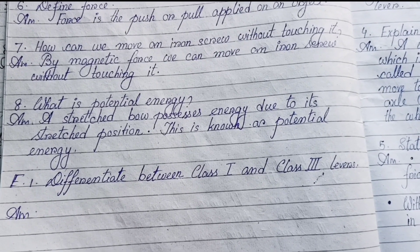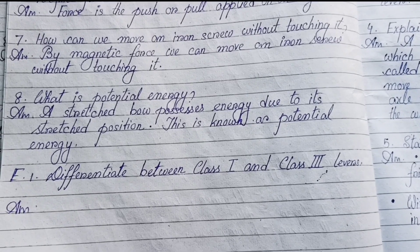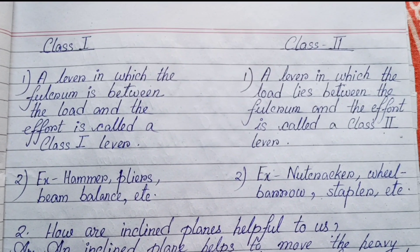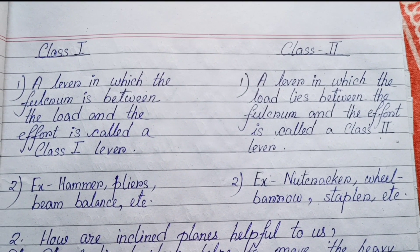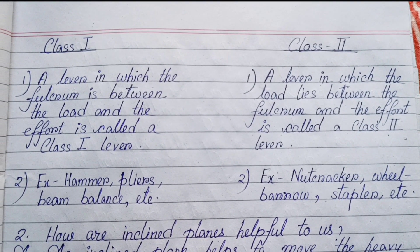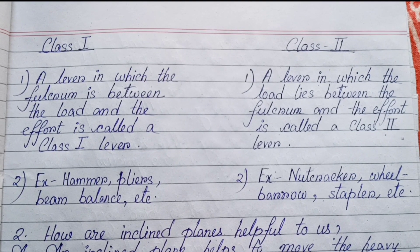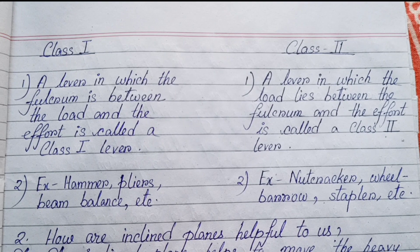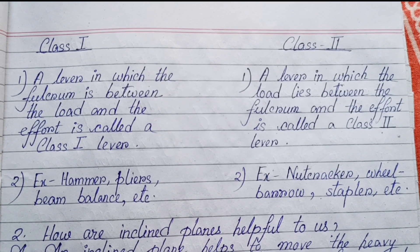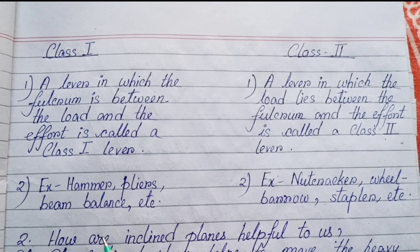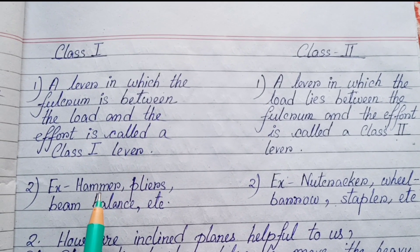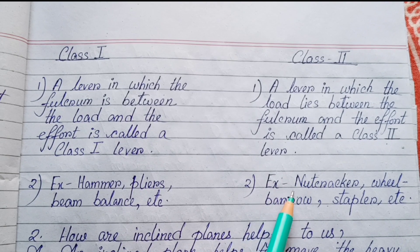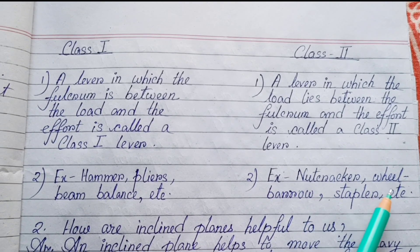Detailed question answers. Number one: Differentiate between class one and class two levers. A lever in which the fulcrum is between the load and the effort is called a class one lever. A lever in which the load lies between the fulcrum and the effort is called a class two lever. Class one lever examples: hammer, pliers, beam balance. Class two lever examples: nutcrackers, wheelbarrow, stapler.